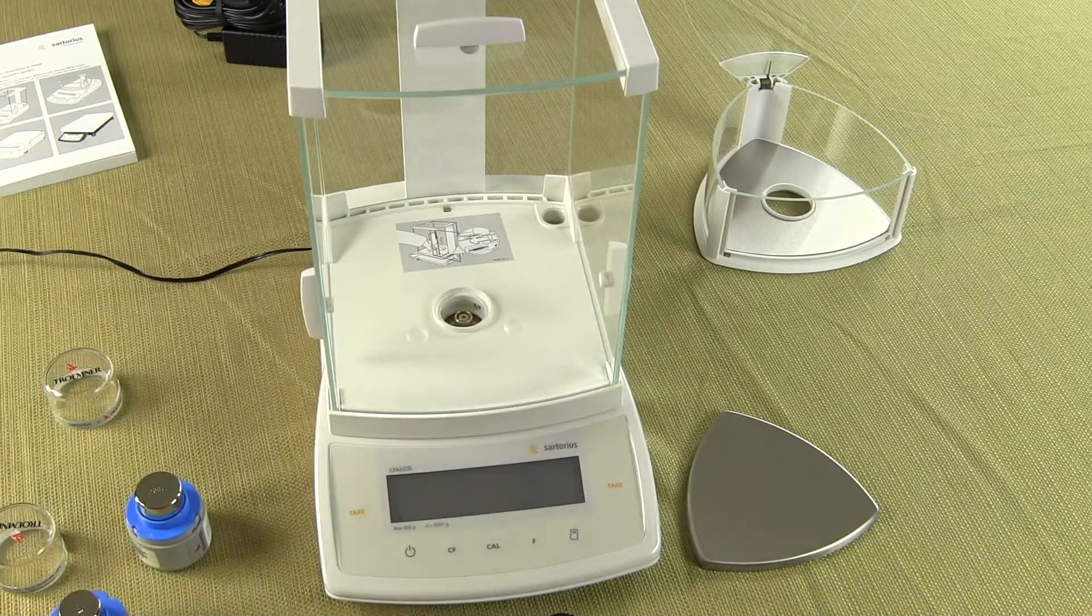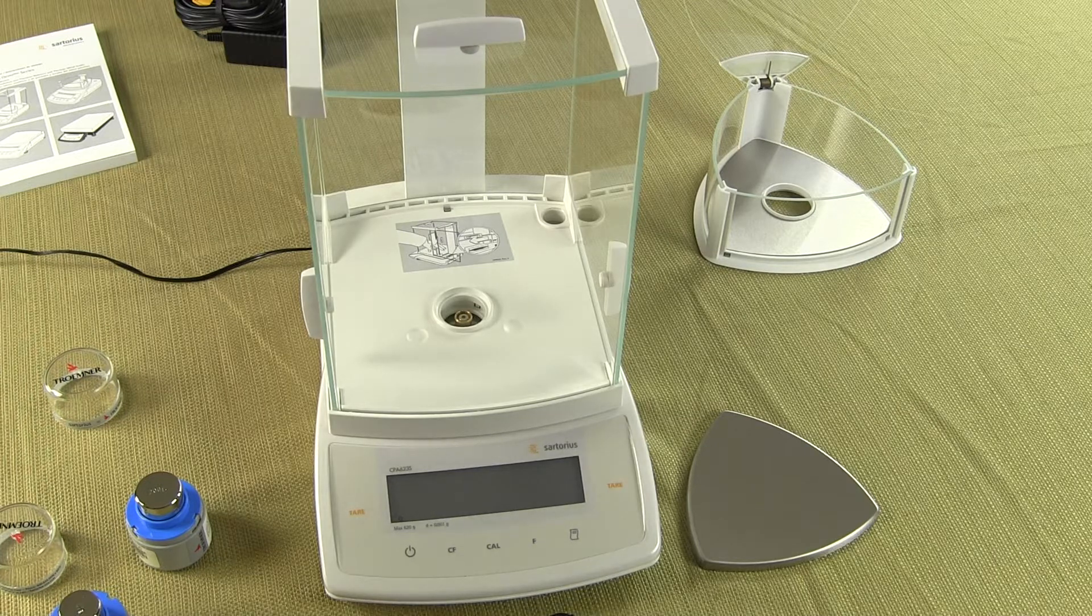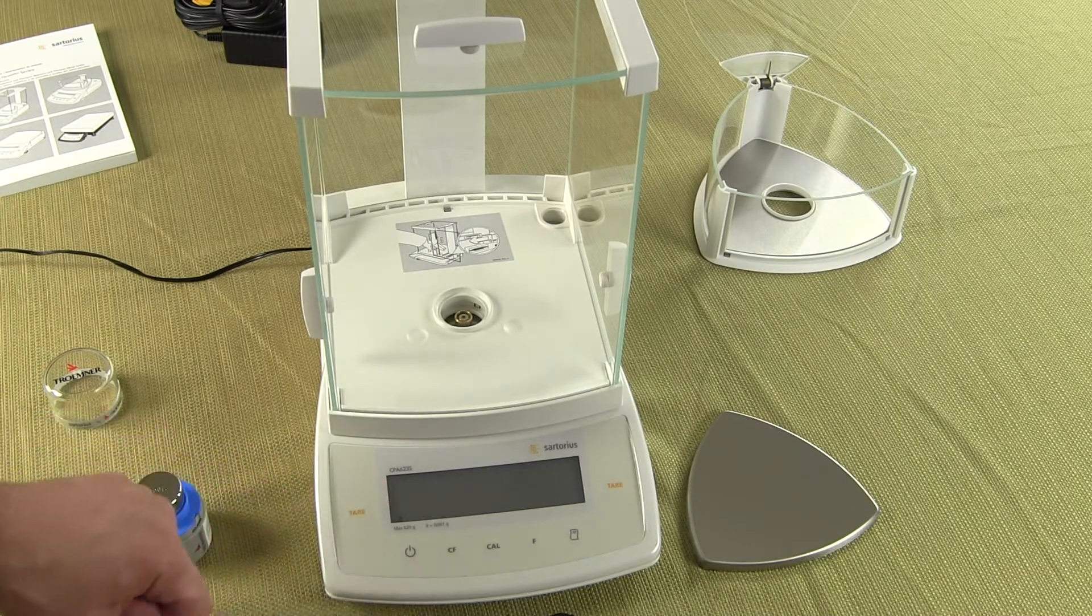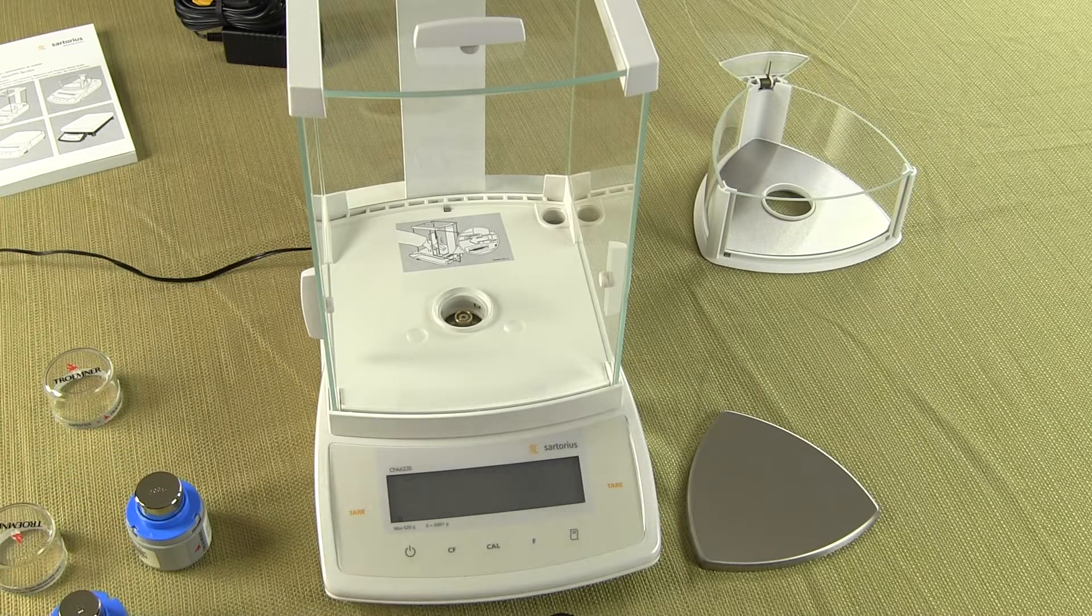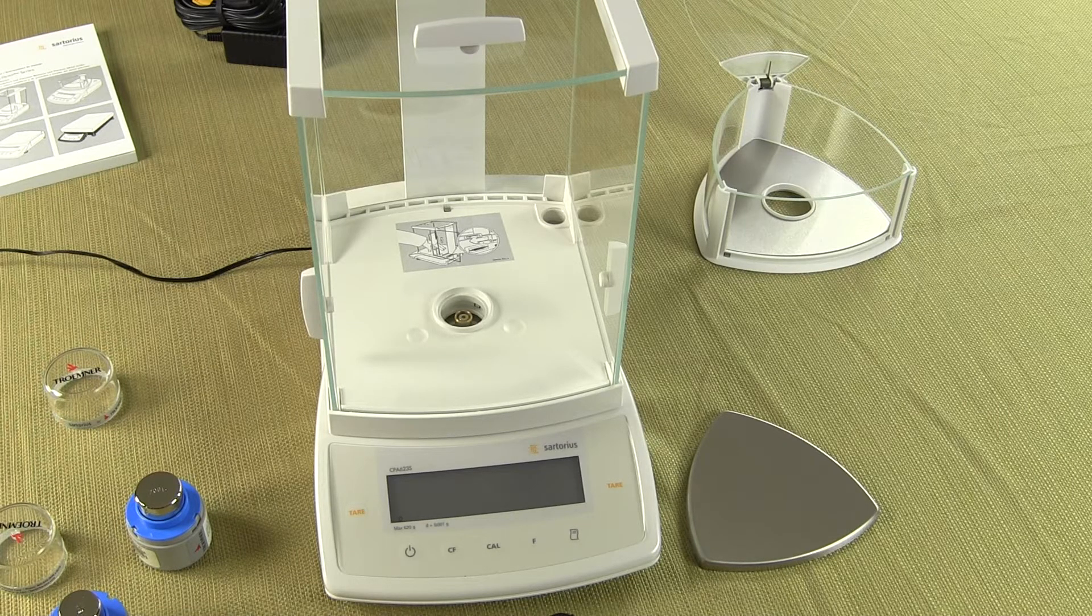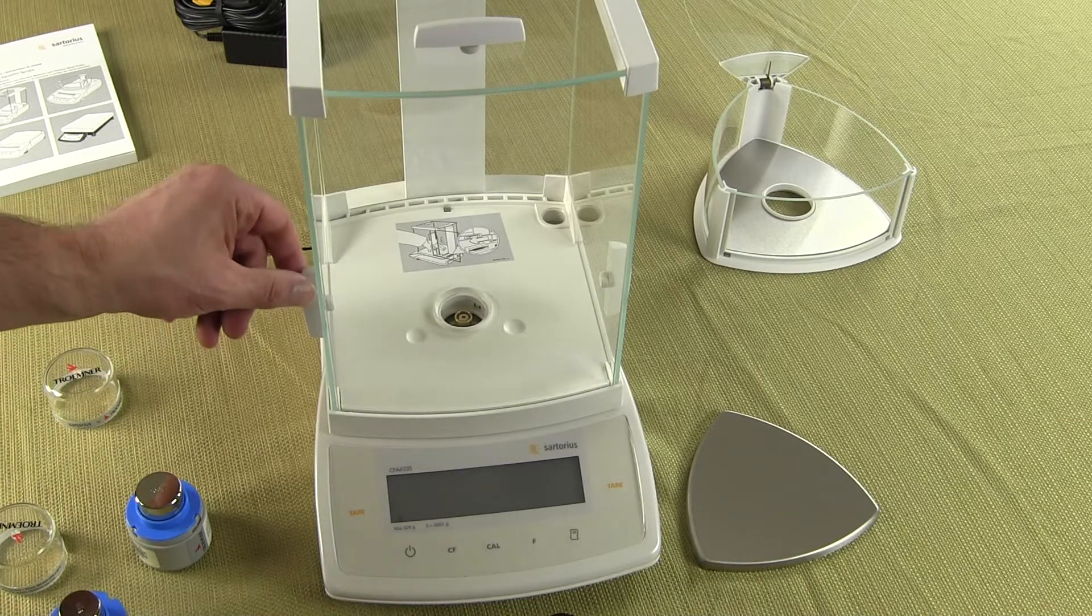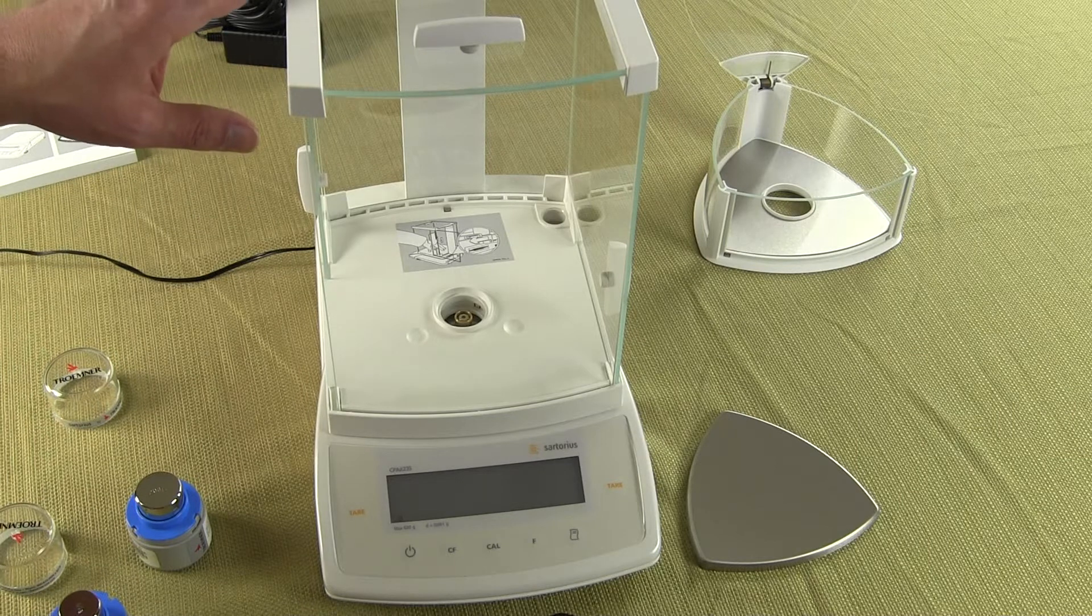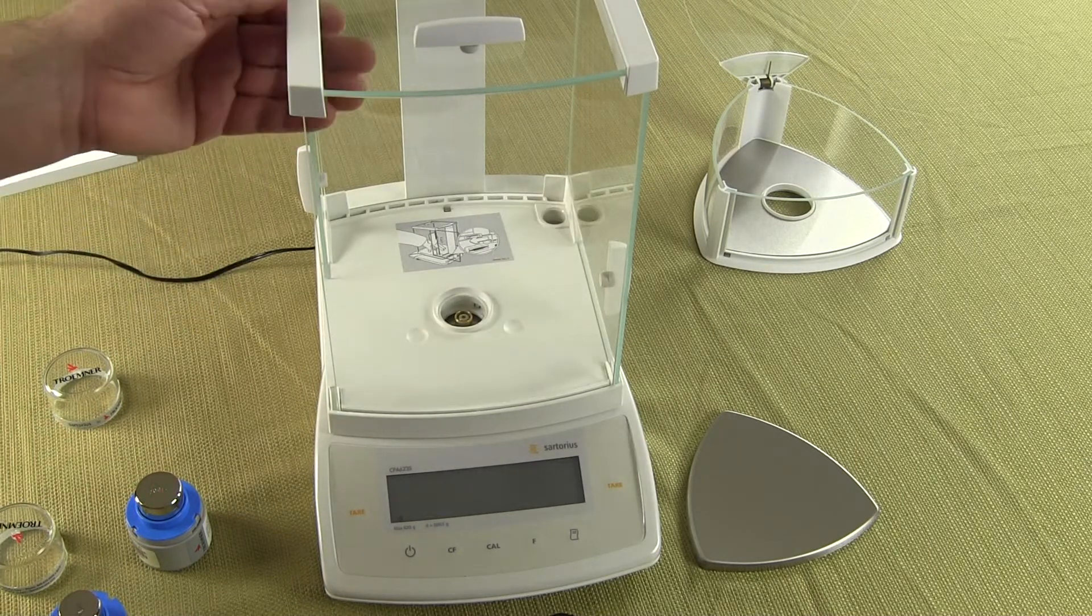A couple other quick things about the balance, the CPA series comes in a half a dozen models. This is the CPA 623s, you also have a 223s, 323s, 423, then there's a 1003s and a 1003p poly range. Now the 1000 gram units actually come standard with the square draft shield, so this is the optional square draft shield if you're buying anything basically 600 grams or under.